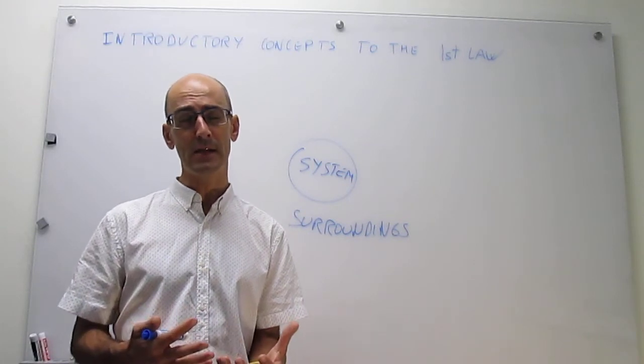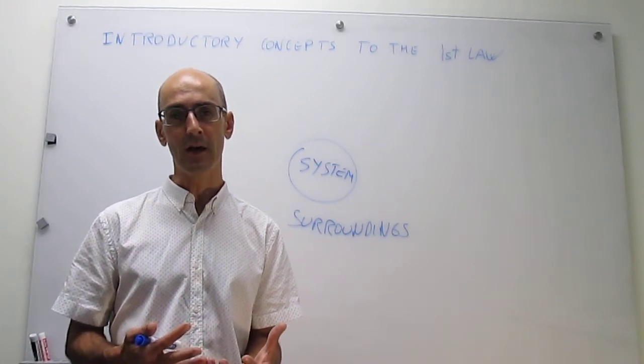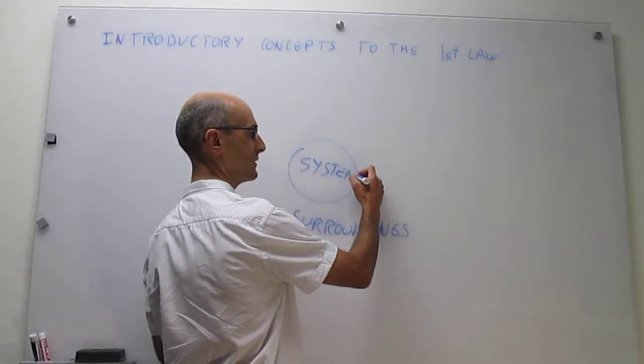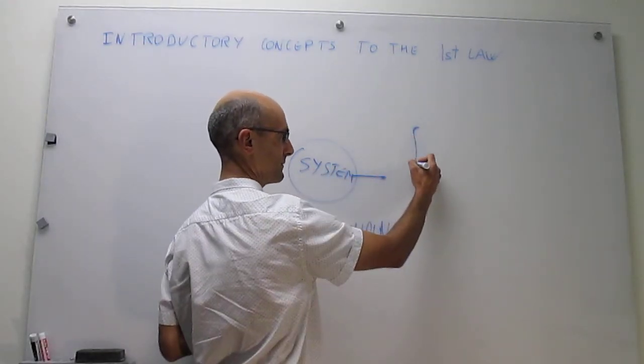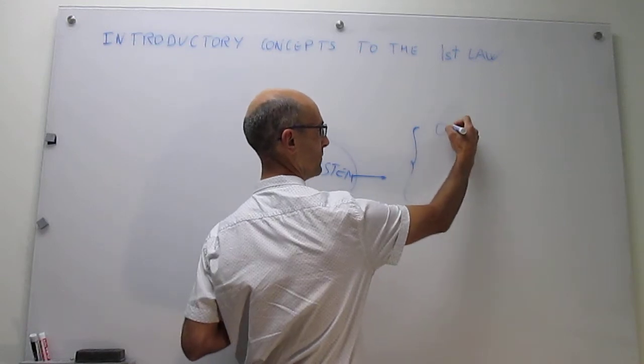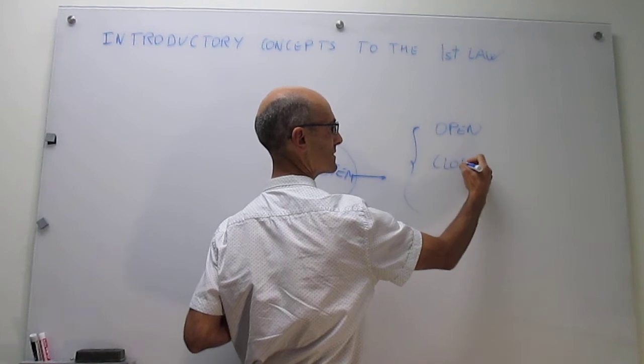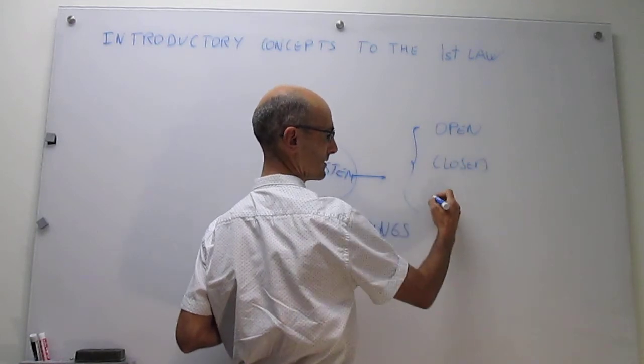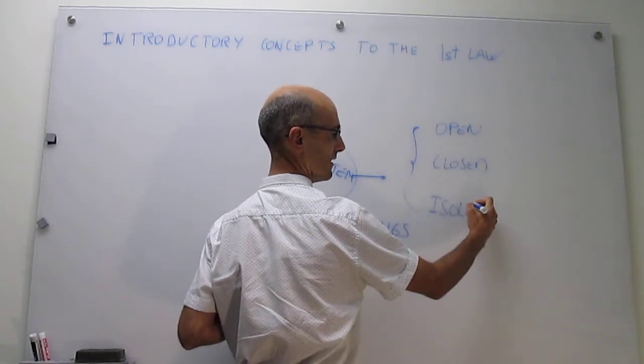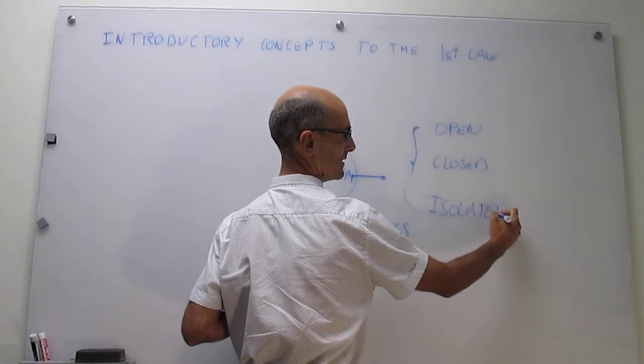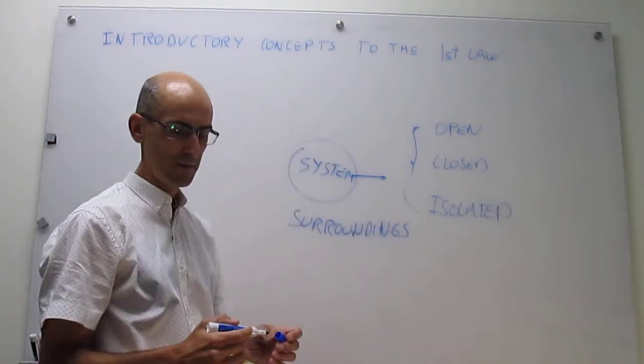So let's talk about the types of system that we're going to be encountering. When you think about the system, there's going to be, in general, three types of system. We're going to have open systems, then we're going to have closed systems, and then isolated systems. So what are the differences between these ones?